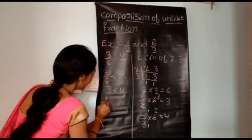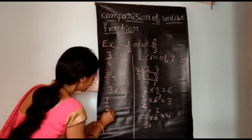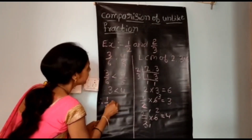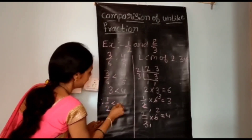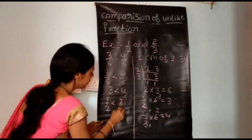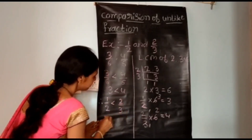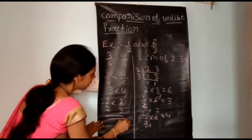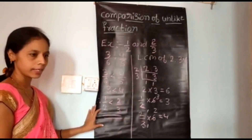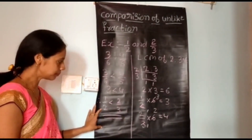Therefore, 1/2 is less than 2/3. This is the comparison of unlike fractions using the LCM method.